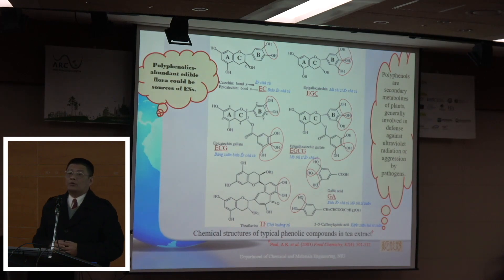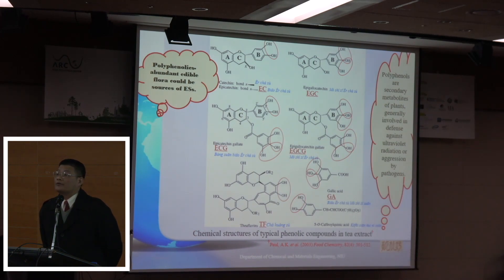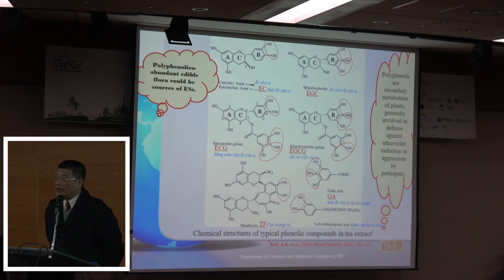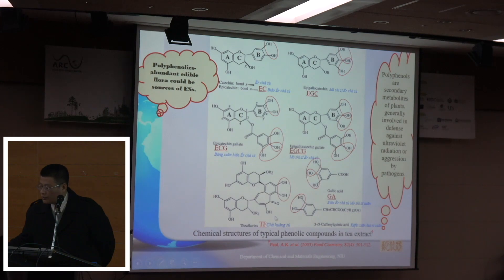People like to use all kinds of bioresources for sustainable development. Going through the literature, we found plants containing polyphenolic compounds, well known to be antioxidants. Looking at tea extract, the main components are catechins such as catechin, EC, ECG, EGCG, and so forth, as well as GA and gallic acid. They are all polyphenolic hydroxyl-group-bearing chemicals.